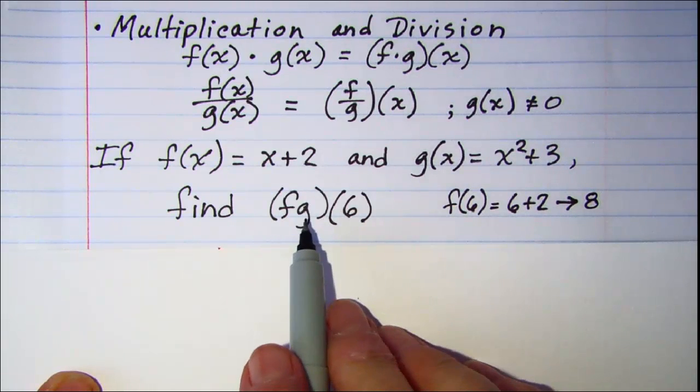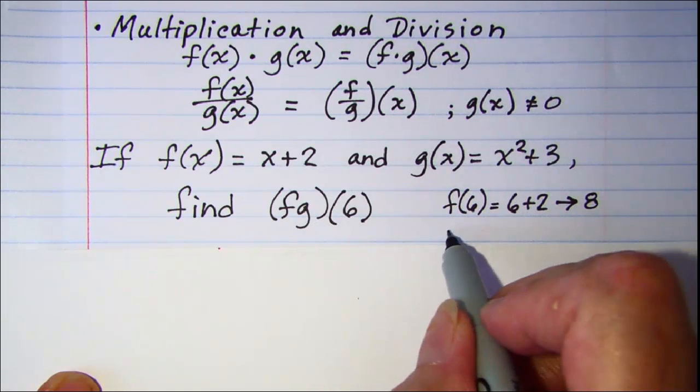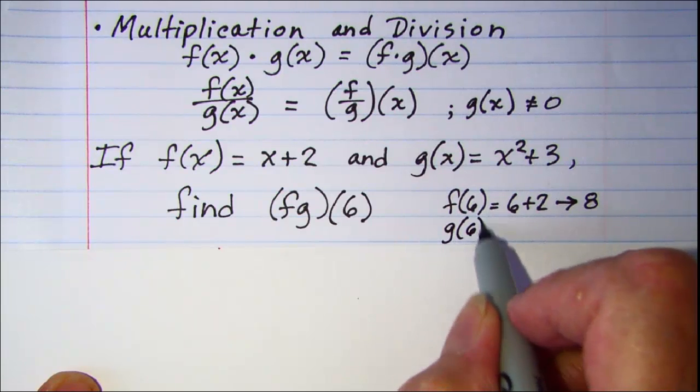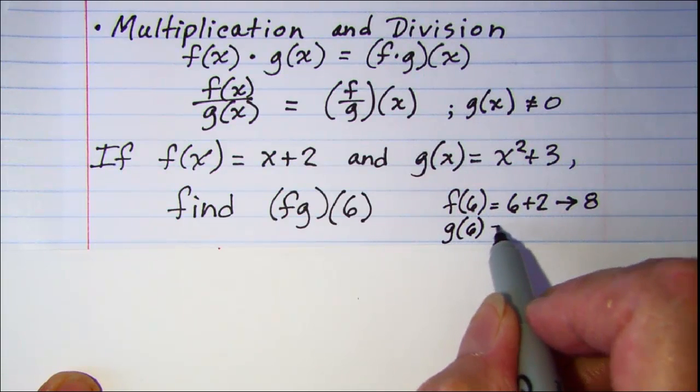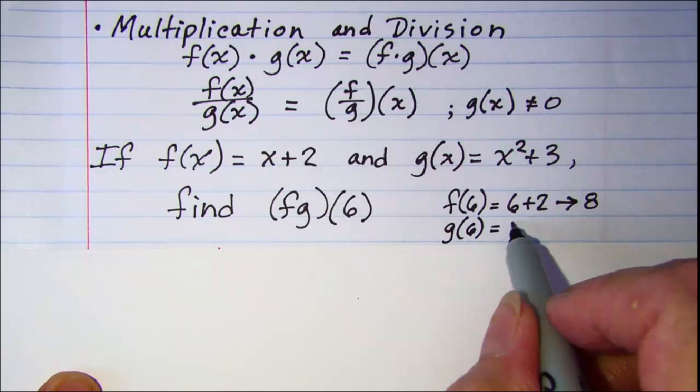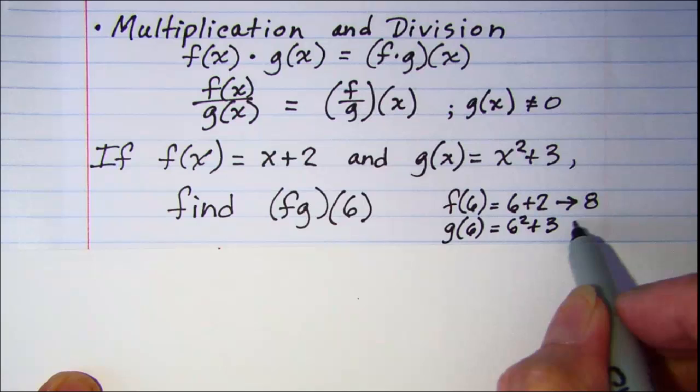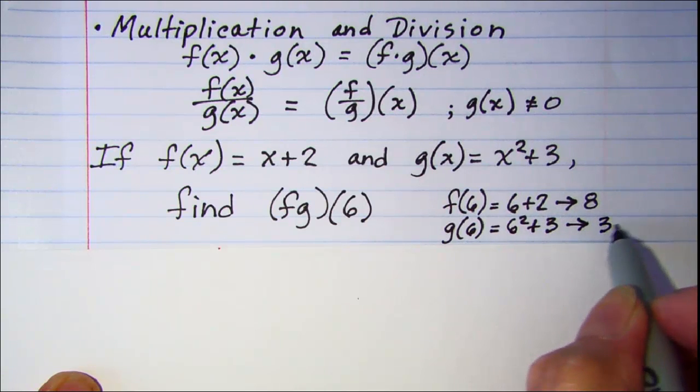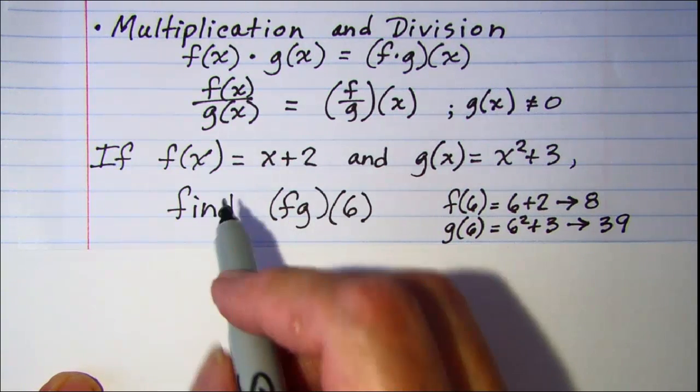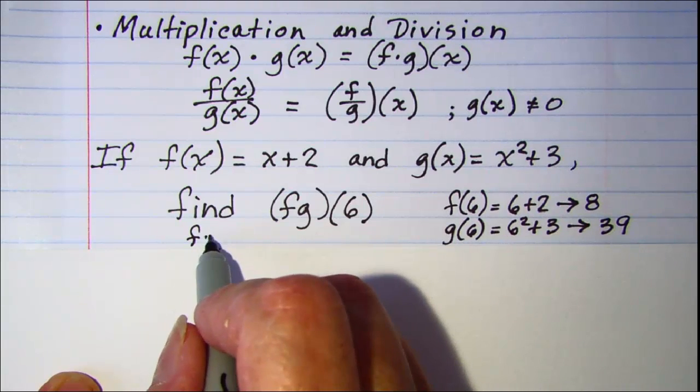We can find g(6) by substituting 6 into the g function. So that's 6² + 3 is 36 plus 3 is 39.